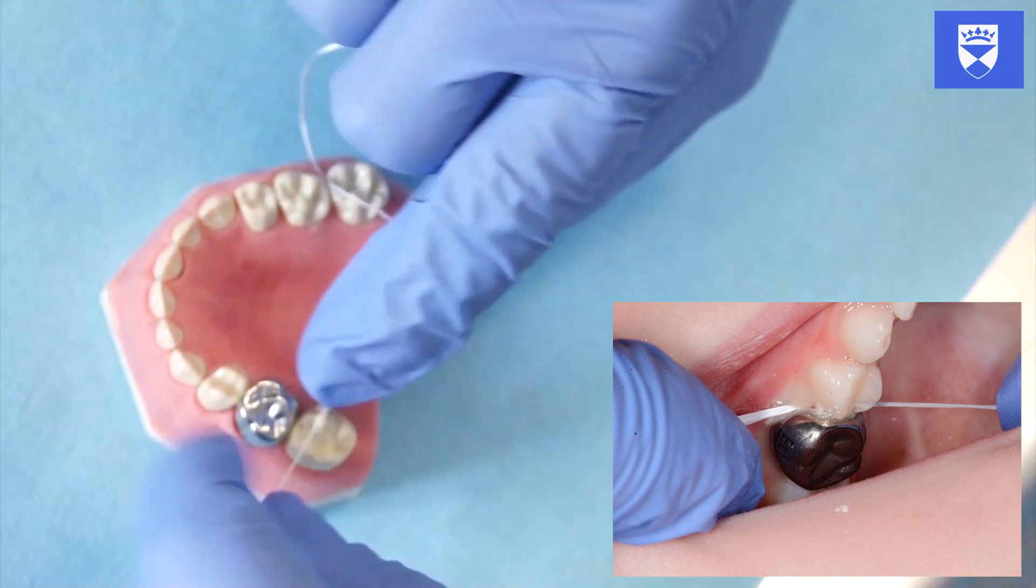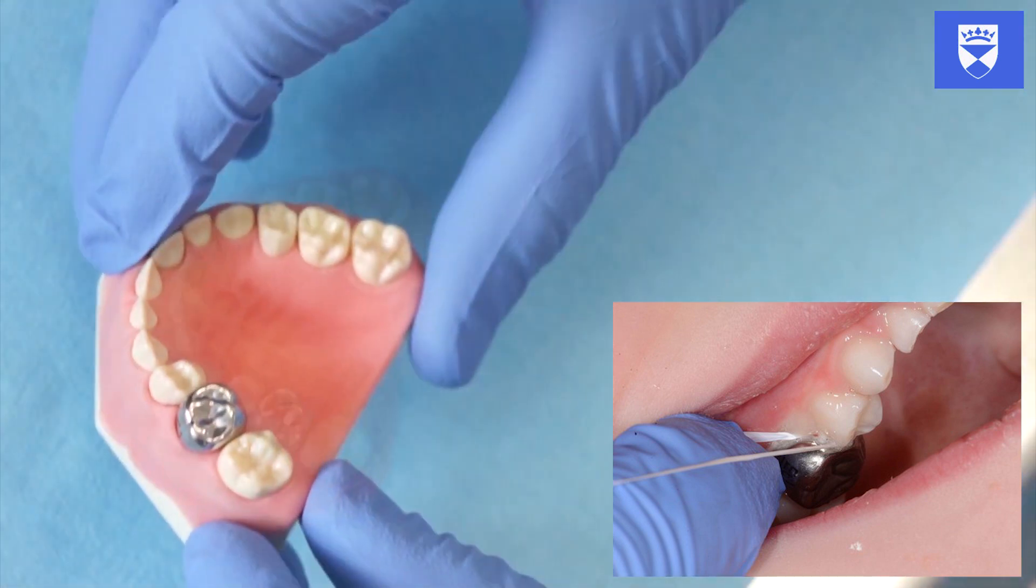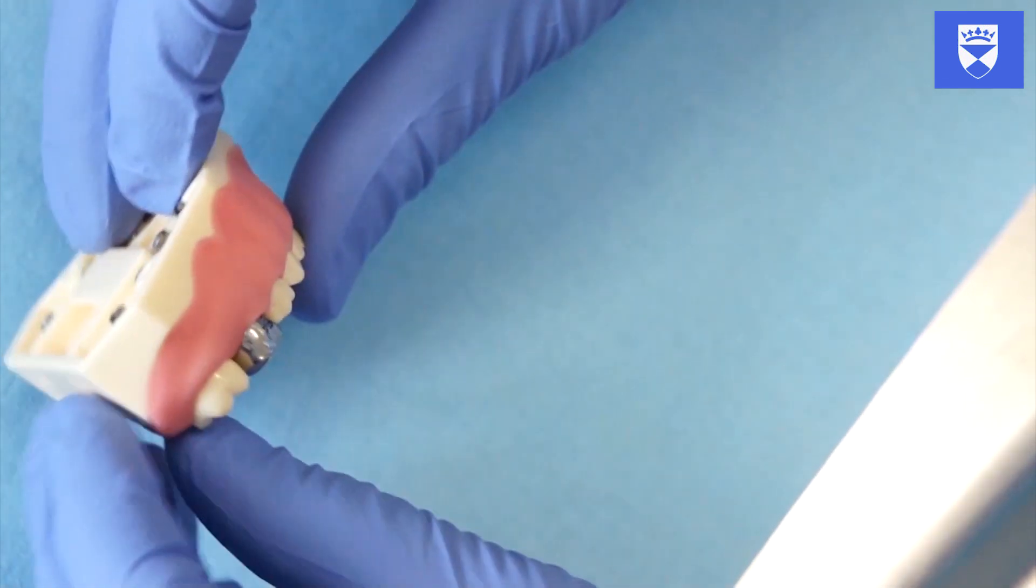If seated properly, the surrounding gingiva often blanches. Measure the overlap at the canines and record any increase in the occlusal vertical dimension in the notes.